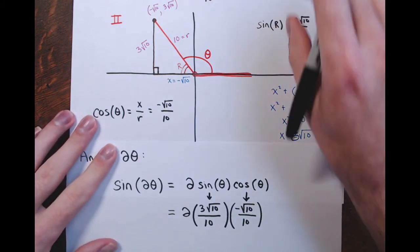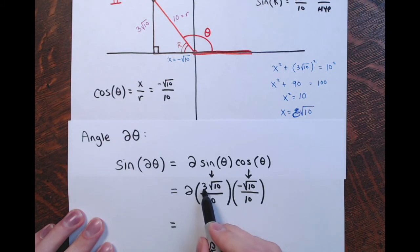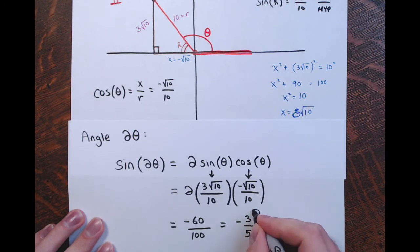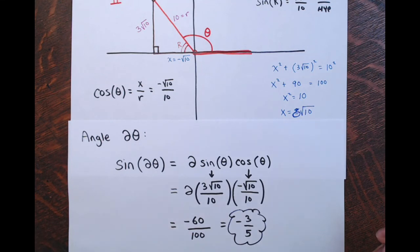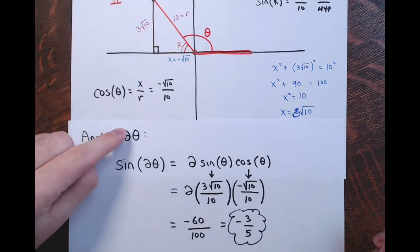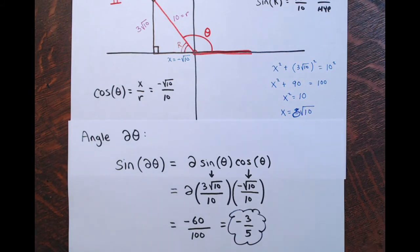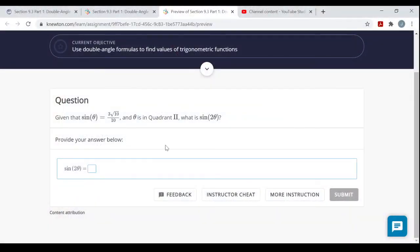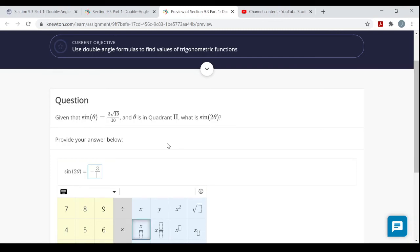Multiplying and simplifying: 2 times (3√10 / 10) times (−√10 / 10). The numerator gives 2 times 3 times √10 times (−√10) = −60. Wait — 2 × 3√10 × √10 = 2 × 30 = 60, negative, so −60. The denominator is 10 times 10 = 100. This reduces to negative 3 fifths. So the sine of 2 theta is negative three-fifths. Back on the website, the answer is negative 3/5.